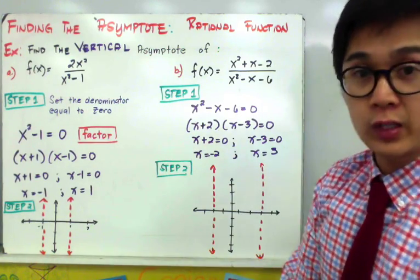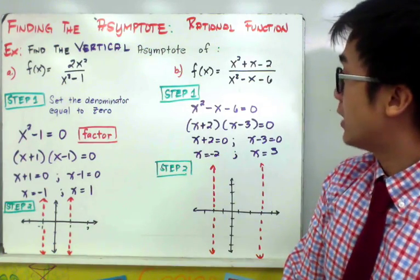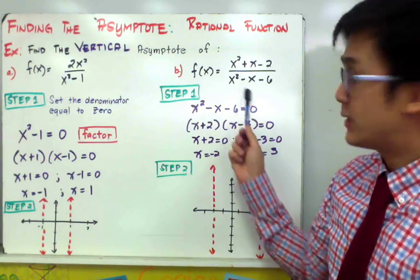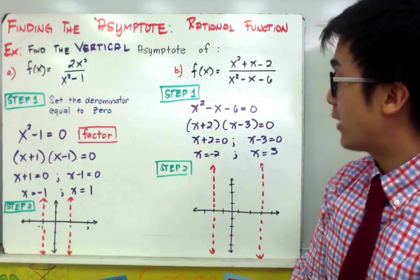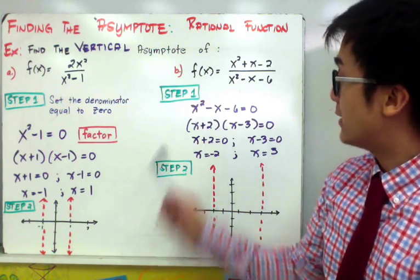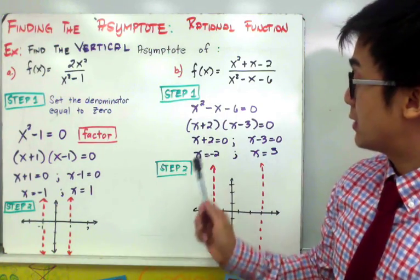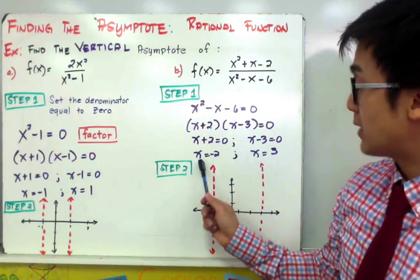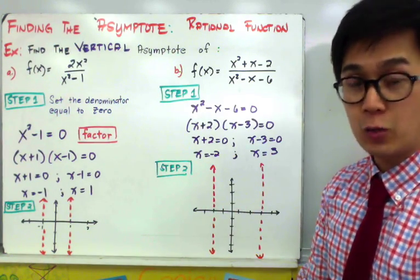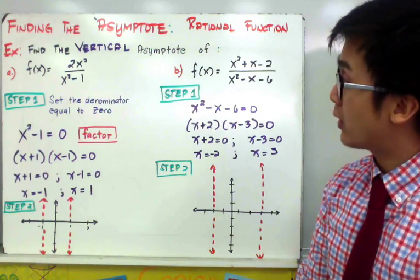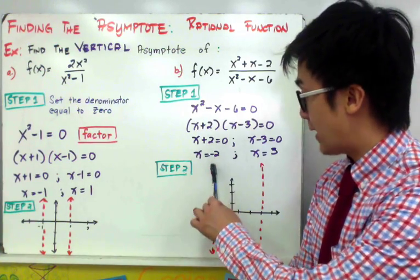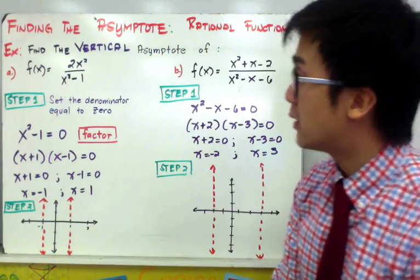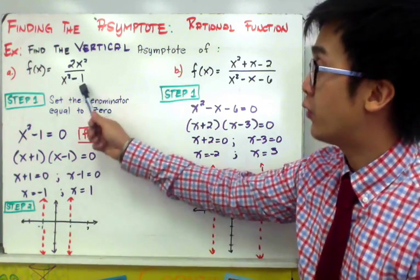For letter B, we find the vertical asymptote the same way: focus on the denominator, set it equal to 0, and solve for x. Since the quadratic function is factorable, we use the zero product property. The two values of x are x = -2 and x = 3. So the vertical asymptotes are at x = -2 and x = 3.